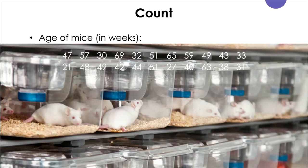Let's pretend that you are a lab technician who is responsible for taking care of lab mice. Here is the record of age of mice measured in weeks. The variable being measured is called the age of mice, and the data collected for the variable are the number of weeks. When you have a data set like this, the very first thing you want to do is to count the total number of data. This is important because the count can provide information about whether you measured everything you want to measure, and sometimes there may be extra data included that should not be there.